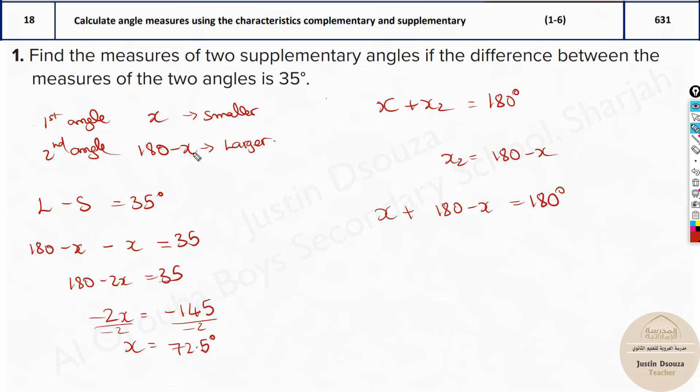Then we can find the large angle. This is the small angle. Now if you're thinking why should I take this as smaller itself, can I take this as larger? Yes, you can take this as larger, this as smaller. I'll show you now. It'll just be x minus 180 minus x, that equals 35. It will definitely work, no problem at all.